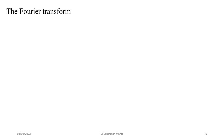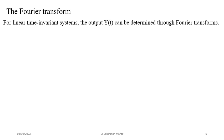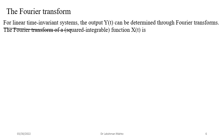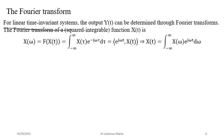Now I will talk about another important part for understanding power spectral density: the Fourier transform. For a linear time invariant system, the output Y(t) can also be determined through the Fourier transform of the input. So first we need to know the Fourier transform of the input signal. The Fourier transform is defined by multiplying the given signal with a kernel function — this is essentially a dot product.